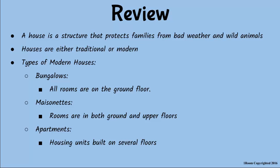Jim summarizes: a house is a shelter that protects us from bad weather and wild animals. Houses are either traditional or modern. Modern houses are of three different types: maisonettes, bungalows, and apartments. Their house is a bungalow since all rooms are on the same floor. Paul's family house is a maisonette with rooms on both the ground floor and upper floor. Apartments are housing units built on several floors in tall buildings.